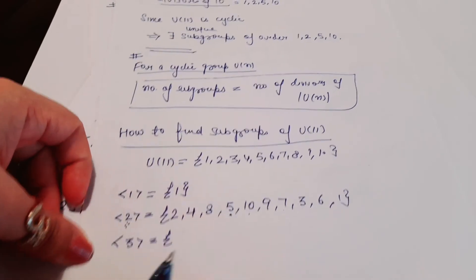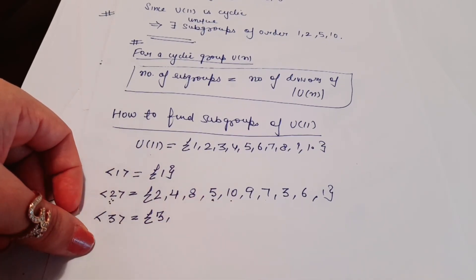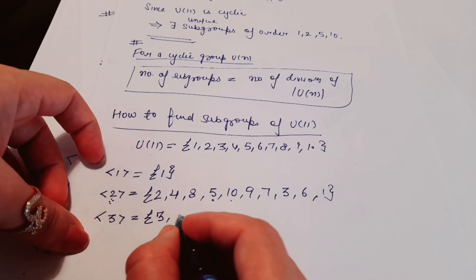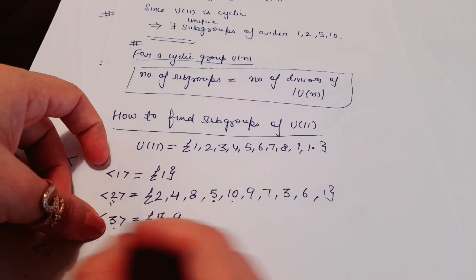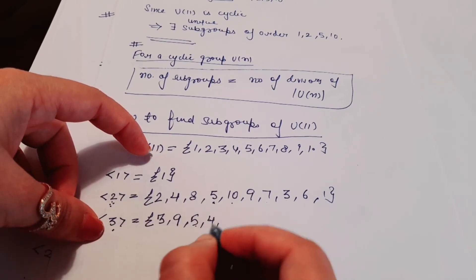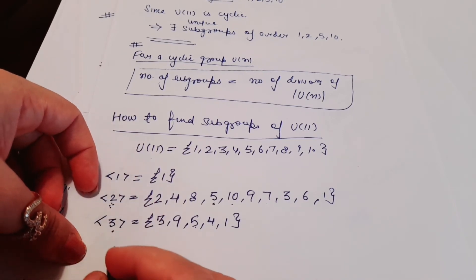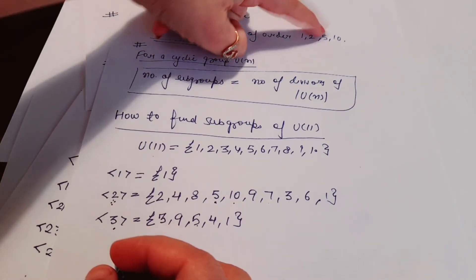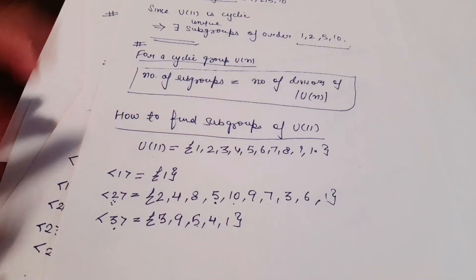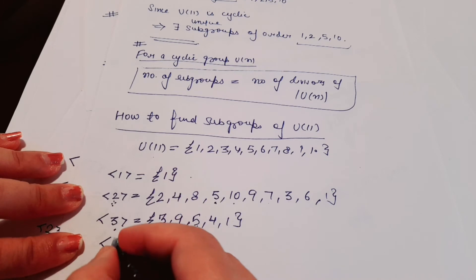For the subgroup generated by 3: 3^1 = 3, 3^2 = 9, 3^3 = 27 → remainder 5, 3^4 = 5×3 = 15 → remainder 4, 3^5 = 4×3 = 12 → remainder 1. So ⟨3⟩ = {1, 3, 4, 5, 9}, which has order 5. We know subgroup orders must be 1, 2, 5, or 10.